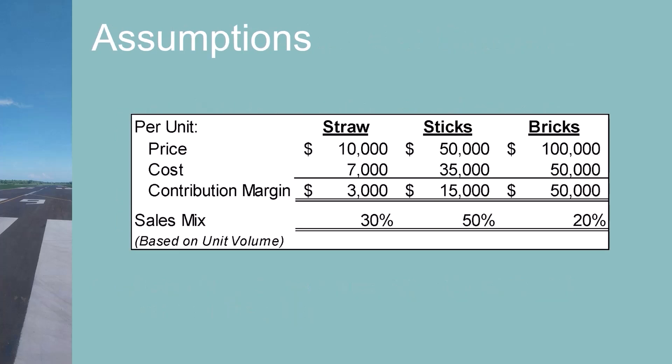For straw homes, the price is $10,000 and the cost is $7,000, which equals a contribution margin of $3,000. The stick homes have a contribution margin of $15,000 and the brick homes have a contribution margin of $50,000. The sales mix based on number of homes sold is 30% straw homes, 50% stick homes, and 20% brick homes.